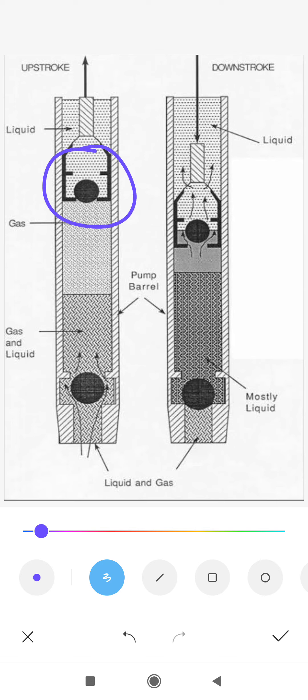This ball valve is called the traveling valve because it is traveling with the upward and downward movement of the plunger. The bottom valve will not travel, so this is called the standing valve.